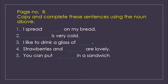The first one is: I spread dash on my bread. The answer is butter — I spread butter on my bread. The second is: dash is very cold. The answer is ice cream — ice cream is very cold. The third is: I like to drink a glass of dash. The answer is milk — I like to drink a glass of milk. Number four: strawberries and dash are lovely. Strawberries and cream are lovely.